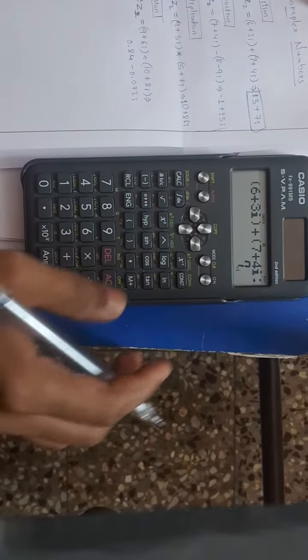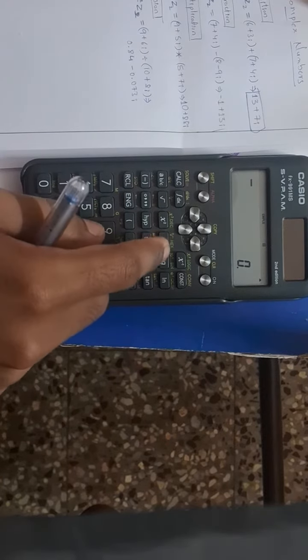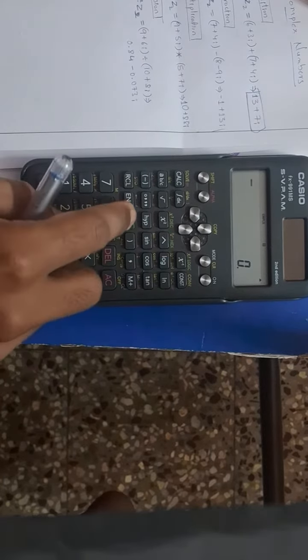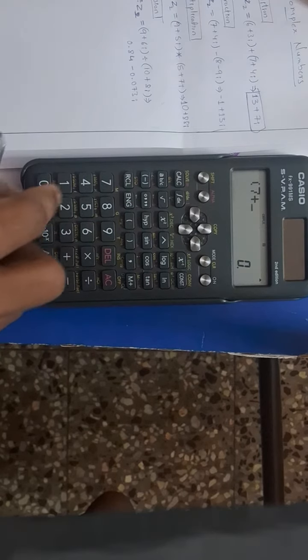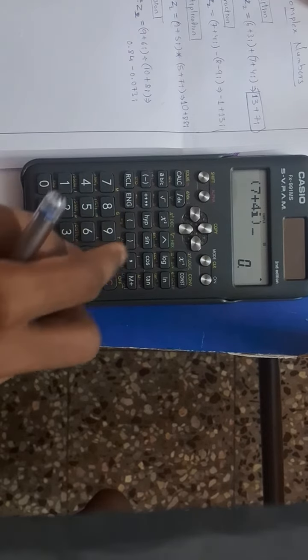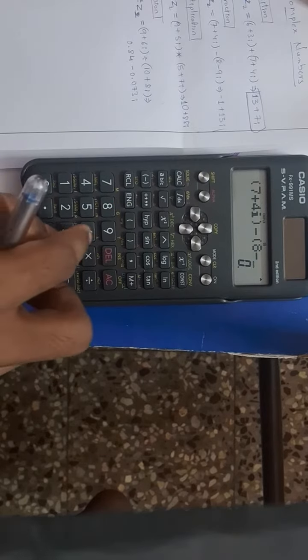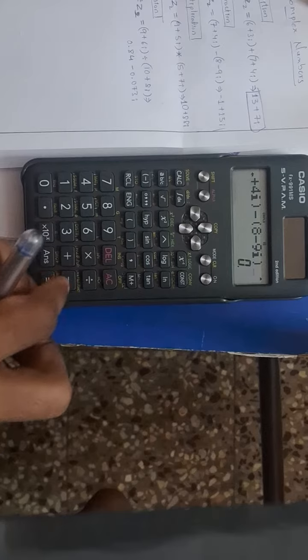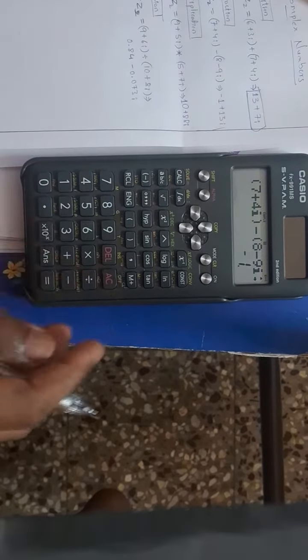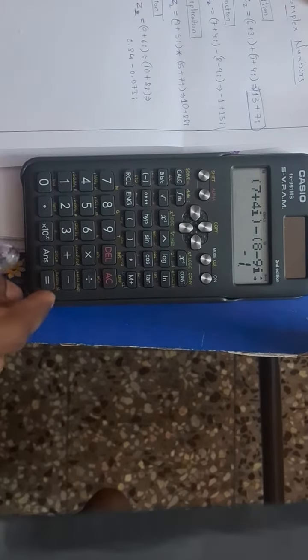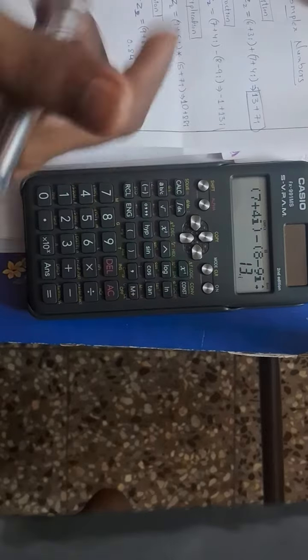Now subtraction of two complex numbers: z1 minus z2, that is (7 plus 4i) minus (8 minus 9i) gives minus 1. And imaginary part, shift equals: minus 1 plus 13i.